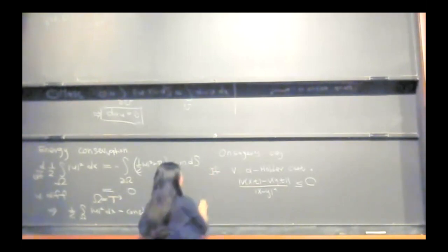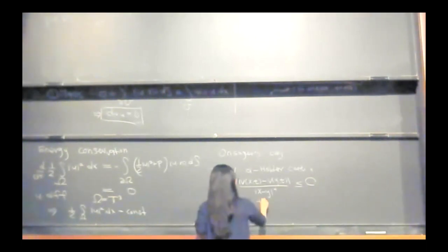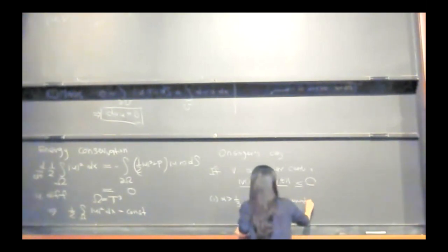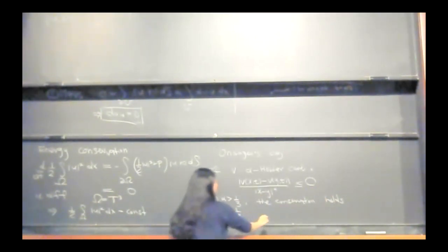Then the Onsager conjecture can be stated as follows: if the velocity is alpha Hölder continuous for alpha greater than one third, we have energy conservation.